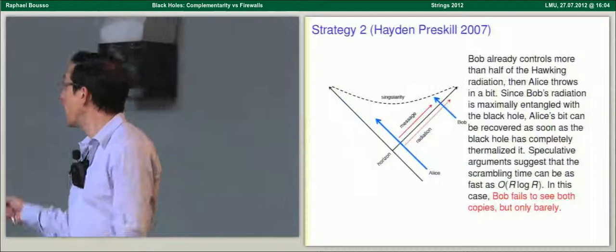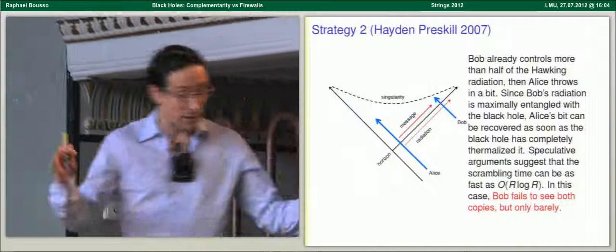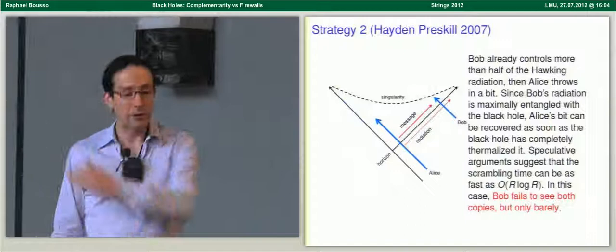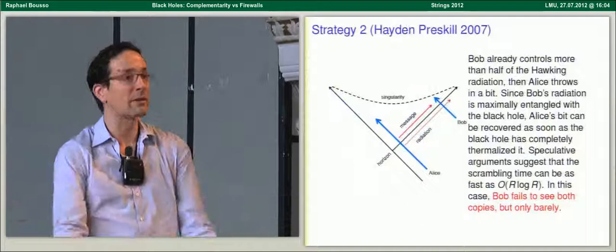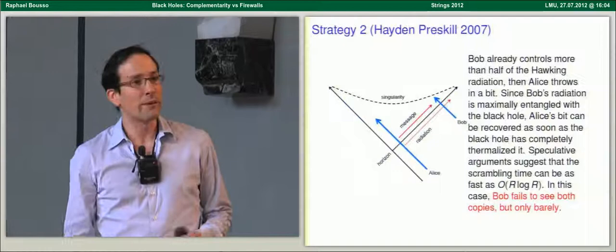Hayden and Preskill came up with a second strategy where you just barely fail, which is more convincing. You have an old black hole — half already evaporated — Bob holds the early Hawking radiation, maximally entangled with the black hole. Alice drops a bit in; the black hole returns it immediately, limited only by the scrambling timescale. Bob gets it back and quickly jumps in to see Alice's copy — this time he misses just barely.